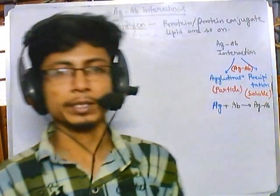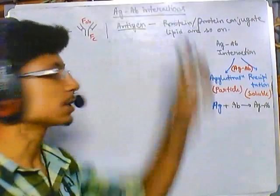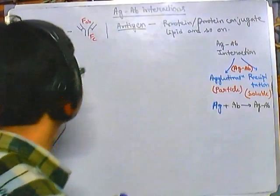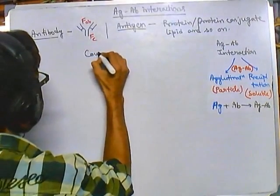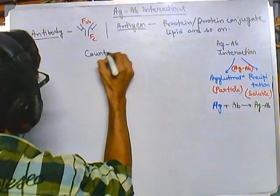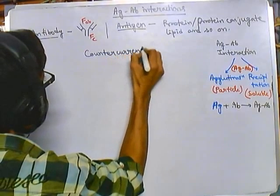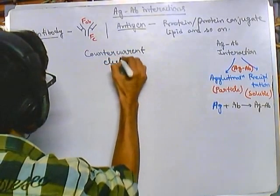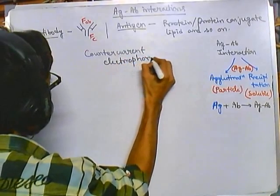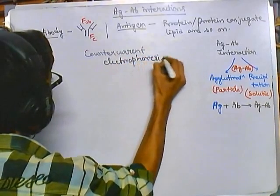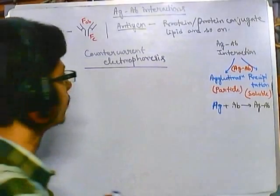We are talking about antigen-antibody interactions, and in this video we will be discussing what is called counter current electrophoresis. This is a technique using immunological complexes, that means the antigen-antibody complexes.